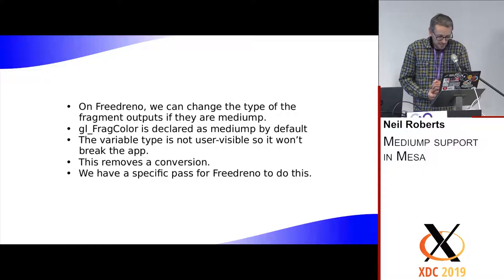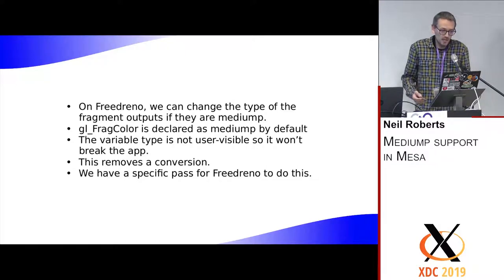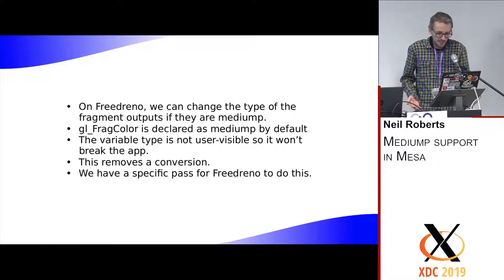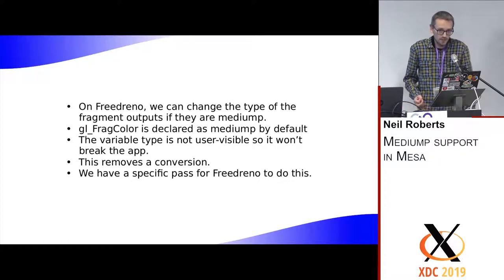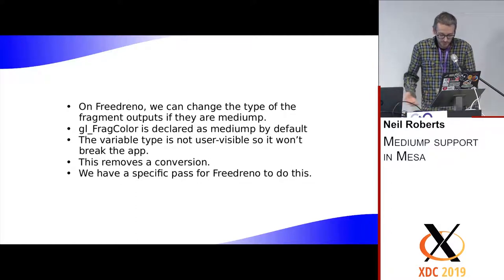This is particularly useful because in GLSL ES all the built-in variables are declared with a precision, and the fragment color is declared as mediump by default. So this will help get rid of a conversion by default on a lot of shaders.